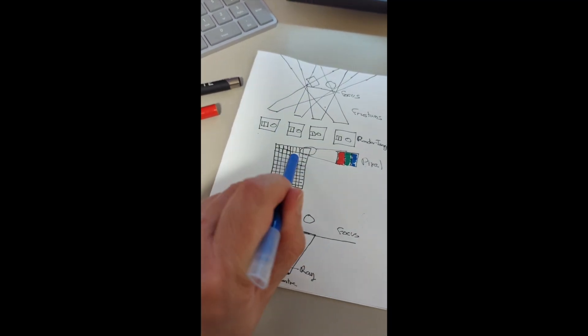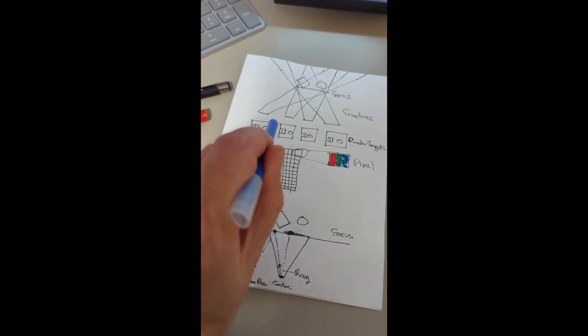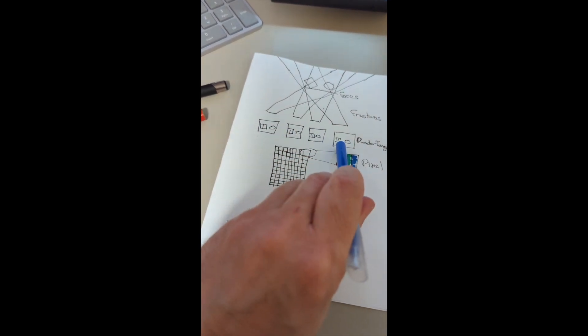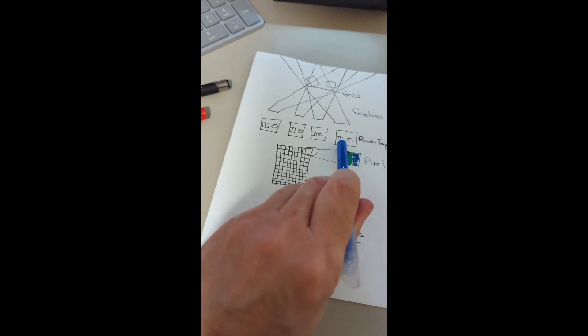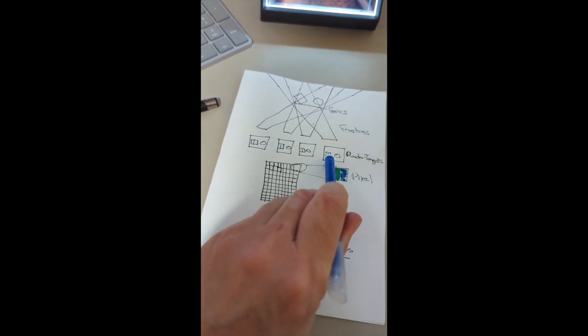When you do all this, you get the final image. But of course it means you've got to render out the same image from slightly different angles, roughly 40 times.